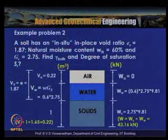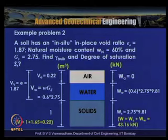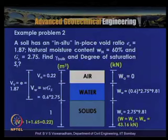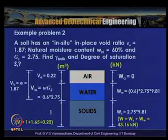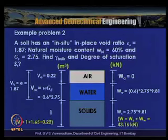In example problem 2, a soil has an in situ void ratio e₀ equal to 1.87, natural moisture content wₙ is given as 60%, and the specific gravity of the solids is given as 2.75. We need to find out the bulk unit weight and degree of saturation of the soil deposit. This problem can be solved by drawing a phase diagram.